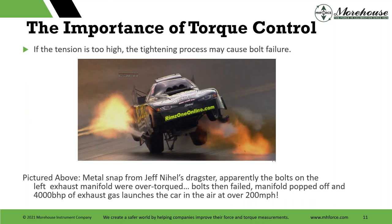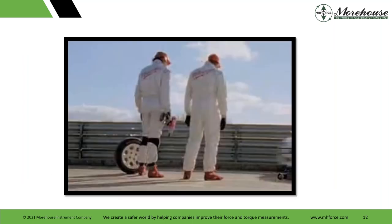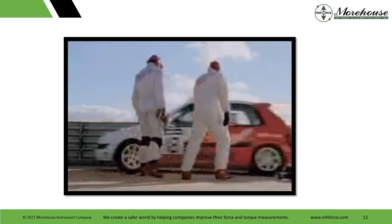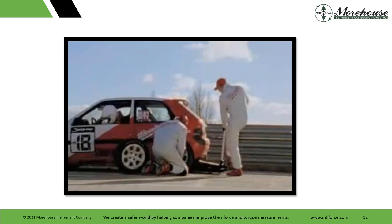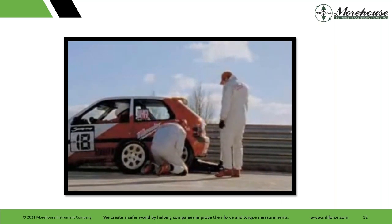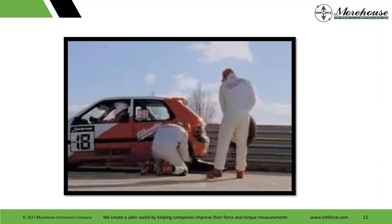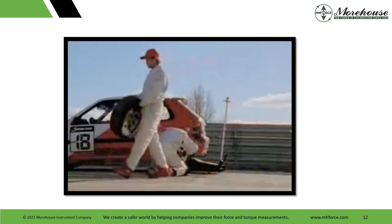We do a lot of force and torque here. Jeff Nyhiel's dragster: he's racing, bolts are over-torqued, they pop off, the left exhaust manifold pops off, and 4,000 BHP of exhaust gas launches the car in the air at over 200 miles per hour. We basically over-torqued our bolts and created a rocket. Here's a video — you do not need sound for this. It's one of my favorite videos when it comes to torque control. We have the second most accurate torque calibration machine in the world, built by NPL, better than 20 parts per million.